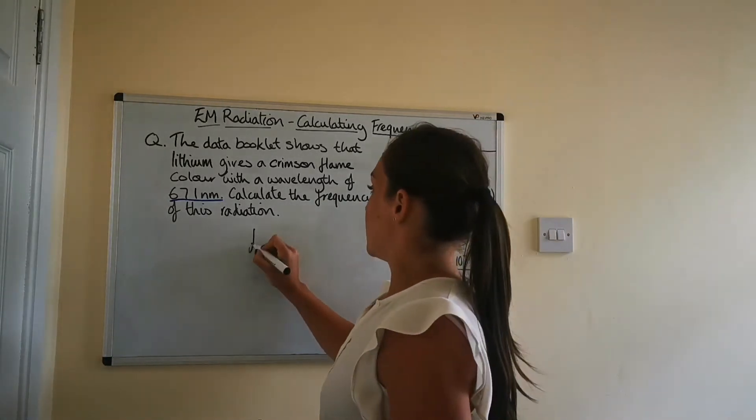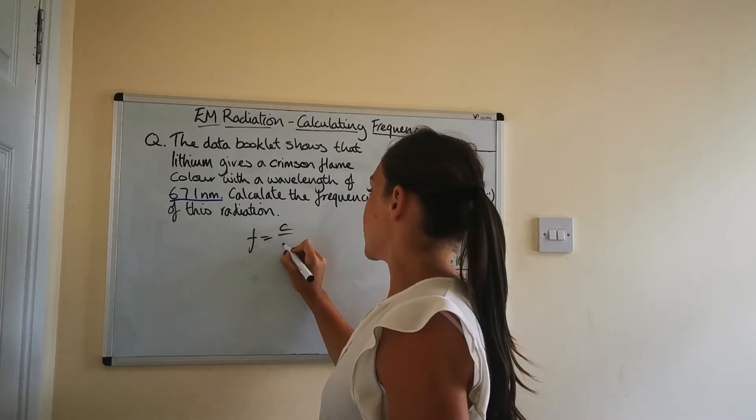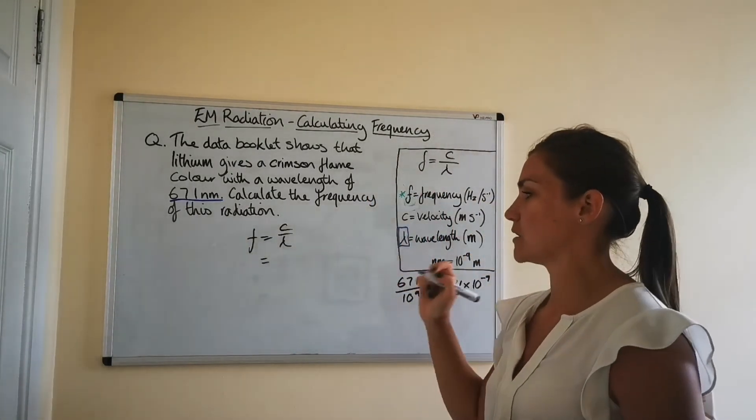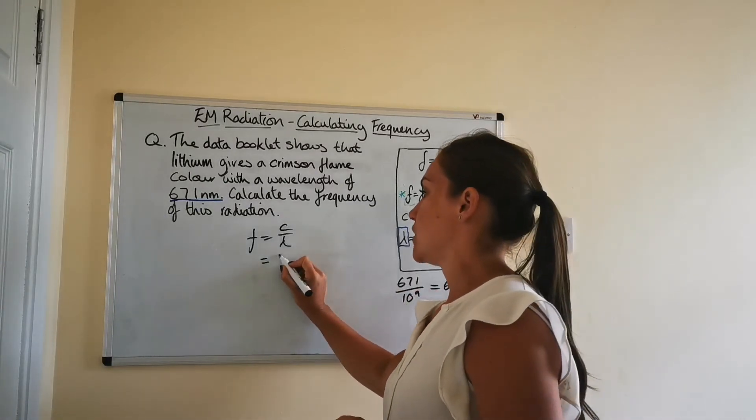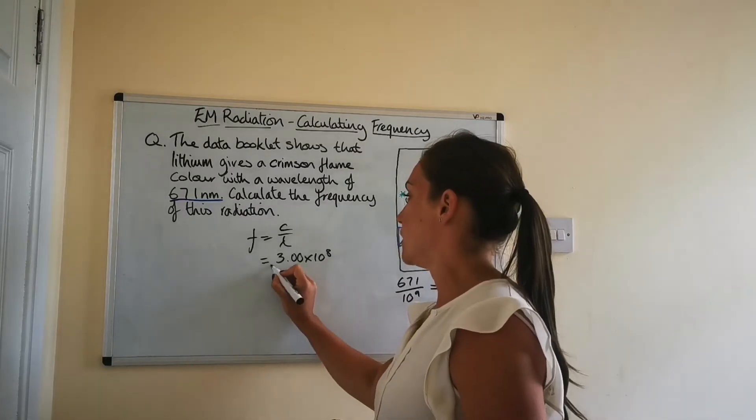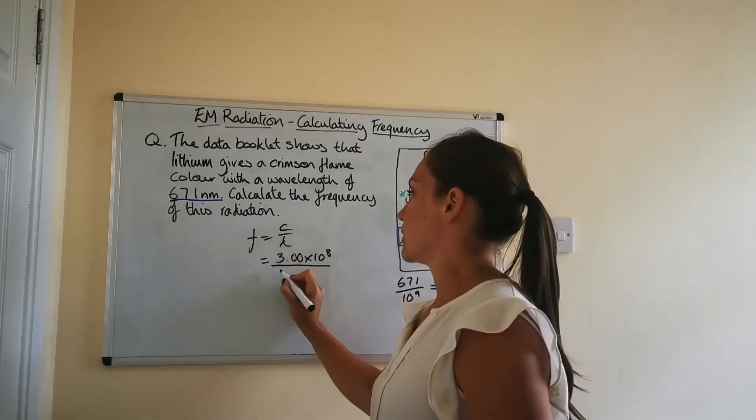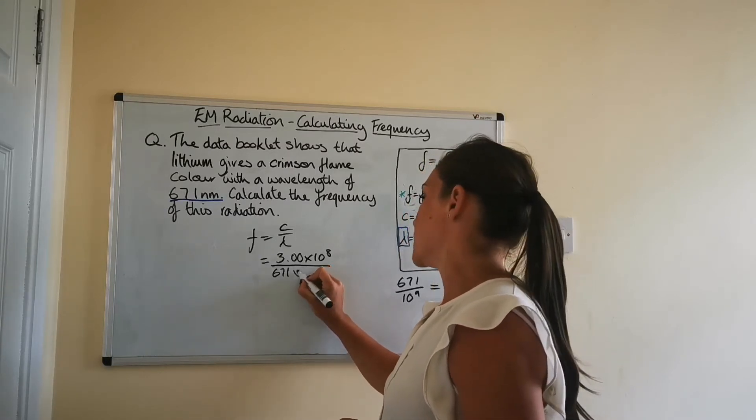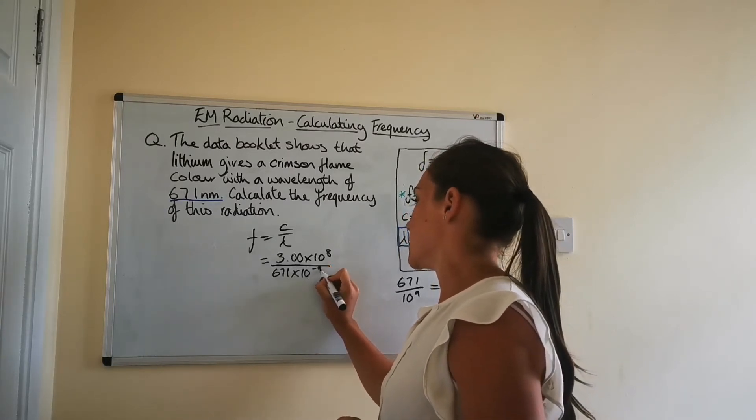So, f equals c over lambda. c, the speed of light in vacuum, is given to you at the back page of the data booklet, so that's 3.00 times 10 to the power of 8. And that's divided by the wavelength, which we're given as 671, but that's in nanometers, so to put it to meters, I need to do times 10 to the negative 9.